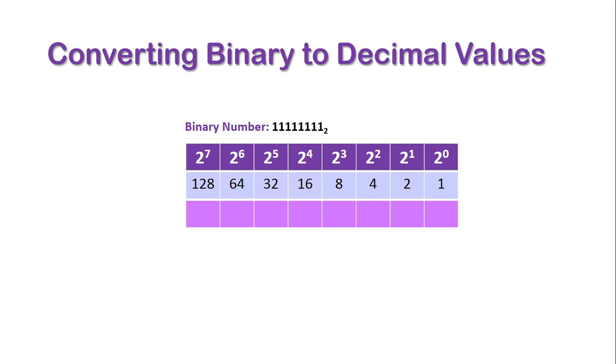The final number we're going to look at is when all the table is filled in with ones, and this helps us understand what the largest possible value in binary is. Let's fill in all our ones, so we're going to have all of these values included in our calculation. I hope now you're starting to see the pattern in the values, in that they all are the double of the previous number, which makes it easier to calculate in your head.